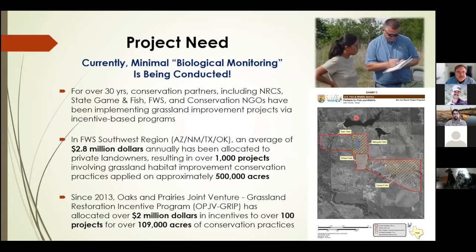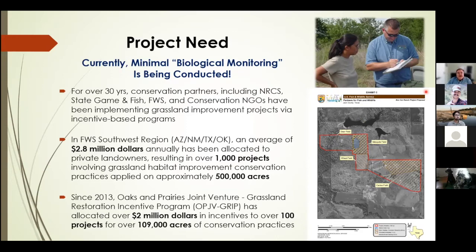Don Wilhelm here. While many of us have dabbled with biological monitoring in grassland ecosystems over the years, there's just not a consistent or shared approach being applied, especially on private lands in the Southwest. Within the boundaries of the Oaks and Prairies Joint Venture in Texas, where I've spent a large portion of my career, various conservation partners — including NRCS, Parks and Wildlife, Fish and Wildlife Service, and several NGOs — have been implementing grassland improvement projects via incentive-based programs.